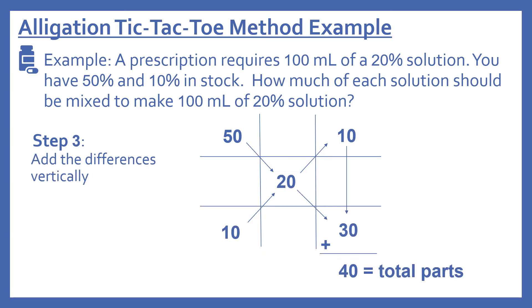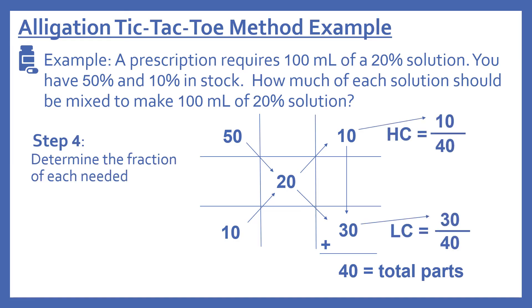Next we find the total parts by adding the differences vertically. We have 10 plus 30, which gives us 40. So 40 is our total parts. Now we determine the fraction of each needed. For the high concentration, it's 10 parts out of 40 total parts, so our high concentration fraction is 10 over 40. For the low concentration, we have 30 parts out of 40 total parts, so it's 30 over 40.